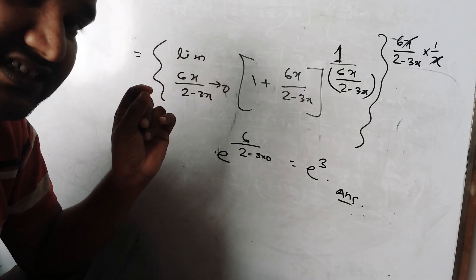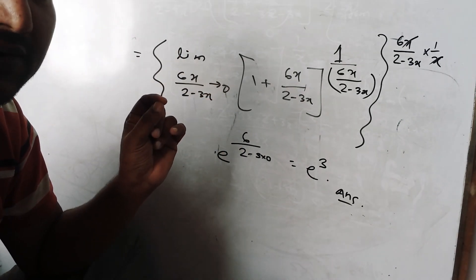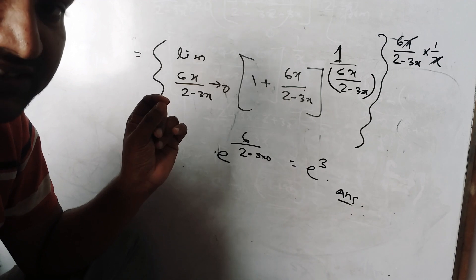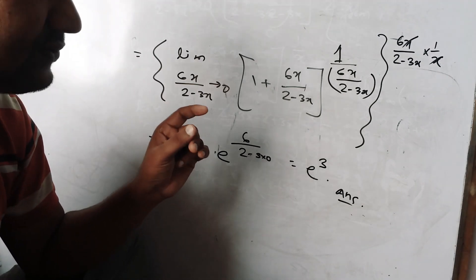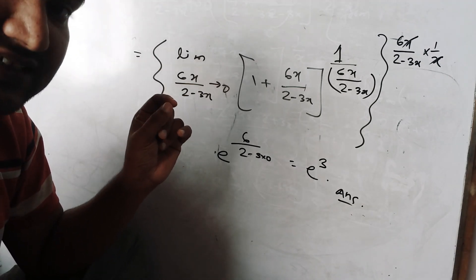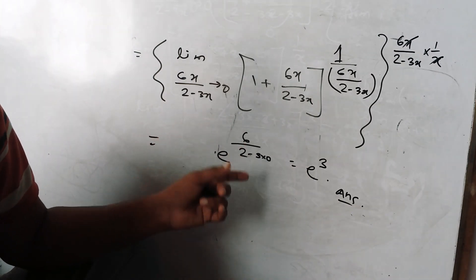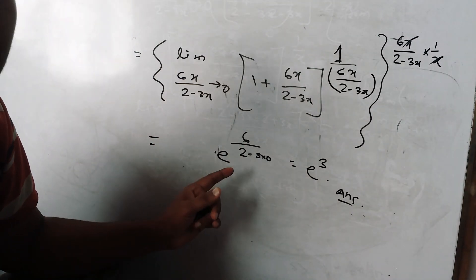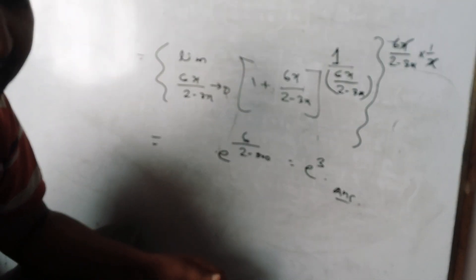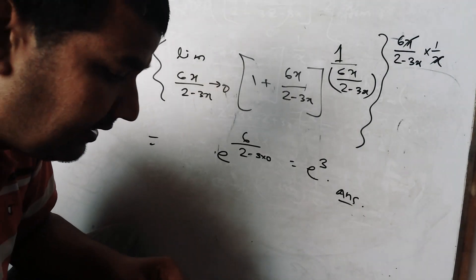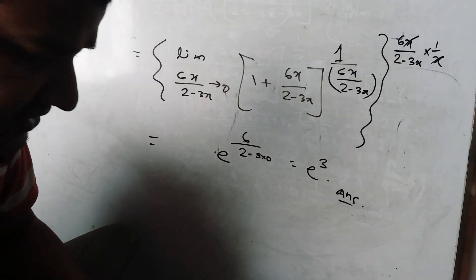Using the format: e to limit as x tends to 0 of (1 plus 1/x) to infinity, and (1 plus x) to the power (1 upon x) — both equal e. So the second formula: lim (1 + x)^(1/x) = e is applied. That is the answer to the question.